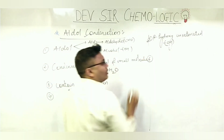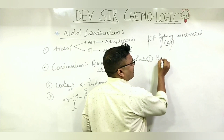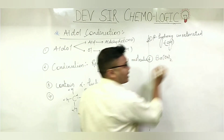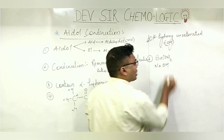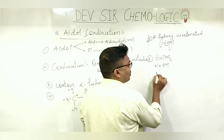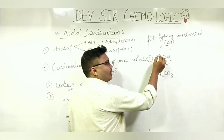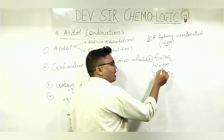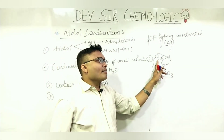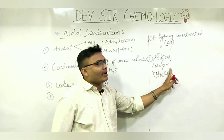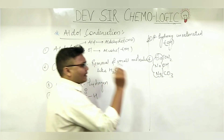Aldol condensation occurs in the presence of 3 bases. First one is barium hydroxide. Second is sodium hydroxide. Third is sodium carbonate. You can remember this as 'banana' — barium hydroxide, sodium hydroxide, sodium carbonate. Clear?